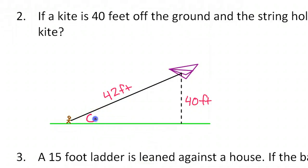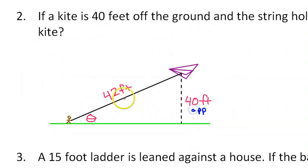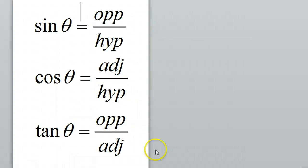What is the angle of elevation to the kite? The angle of elevation is the angle to the ground, so this would be the angle of elevation. How do we find angles? Inverse trig functions. From the angle of elevation here, this is opposite because it's across from it. And of course this is the hypotenuse, no matter what. So we have opposite and hypotenuse — that's the sine function.